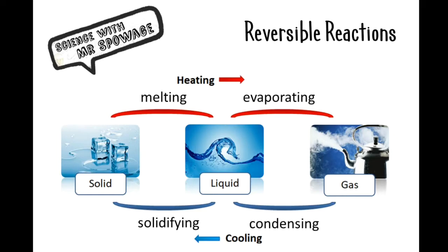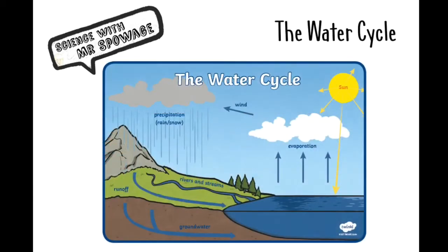This example is for water, which is probably the most commonly known. We can move between solid water, which we would call ice, to a liquid by melting it. We could also then evaporate that water and turn it into water vapour. We could then condense it by cooling that water vapour down, just like on your bathroom mirror, and then we could solidify that water by freezing it. This is also well known because of the water cycle, in which water evaporates, and then when it cools, it condenses and falls back down as precipitation or rain.